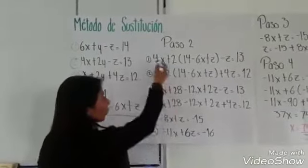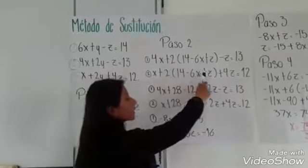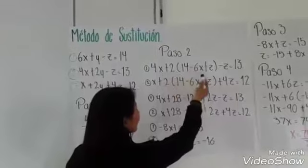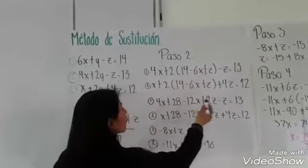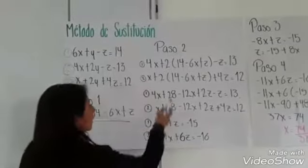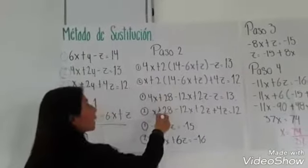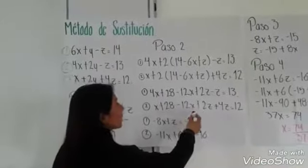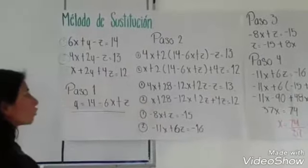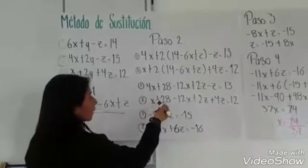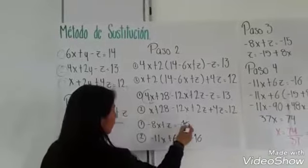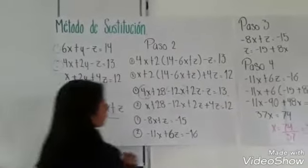Lo que vamos a realizar es que el 4X lo vamos a pasar igual y el 2 lo vamos a multiplicar a todo lo que está en el paréntesis: 14 por 2 es 28, más 2 por menos 6X es menos 12X, y más 2 por Z es más 2Z. De igual forma lo vamos a hacer con la segunda ecuación: X más 2 por 14 es 28, más 2 por menos 6X es menos 12X, y más 2 por Z es 2Z, más 4Z, es igual a 12. Lo único que vamos a realizar después es sumar todas aquellas que sean iguales, es decir las 4X menos 12X y las Z.